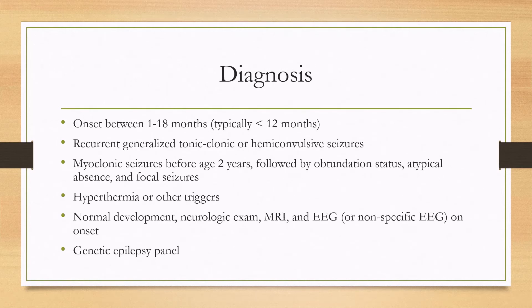Diagnosis typically arises before 12 months of age. There are recurrent and generalized tonic, clonic, or hemiconvulsive seizures. Myoclonic seizures develop before the age of two years, and that can be followed by obtundation status, atypical absence, and focal seizures. Hyperthermia is commonly a trigger, but there can be other triggers such as photosensitivity. At the onset of the disease, there is typically normal development, a normal exam, and normal MRI and EEG.